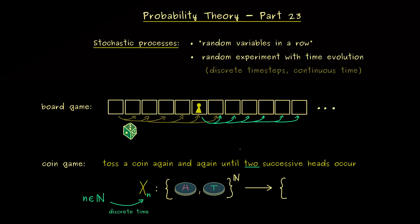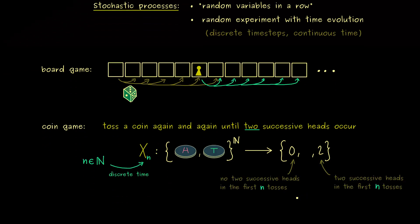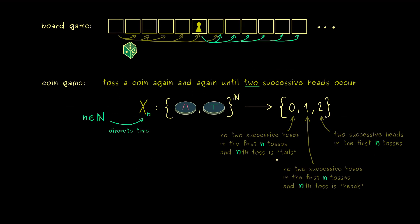If we don't find two successive heads in the first n tosses we say we have 0. And on the other hand if we find them then we say the outcome is 2. But now you also see I left some space for the middle ground. This is because we obviously have the chance of getting two successive heads in the next round if the current toss is heads. More precisely this means if we didn't find two successive heads yet but the nth toss is exactly heads then we put the outcome to 1.